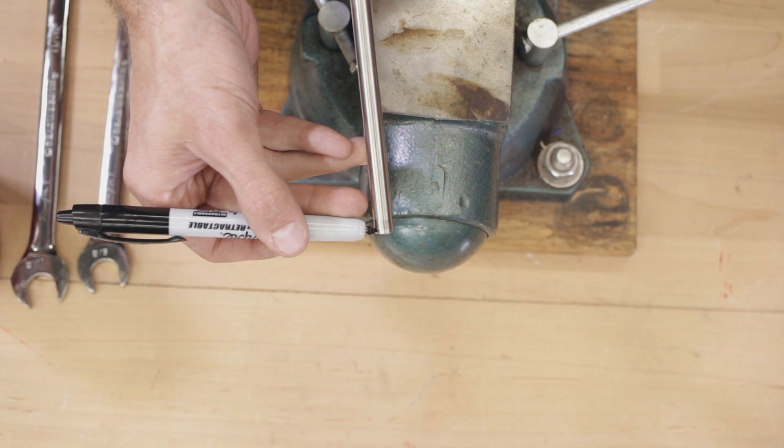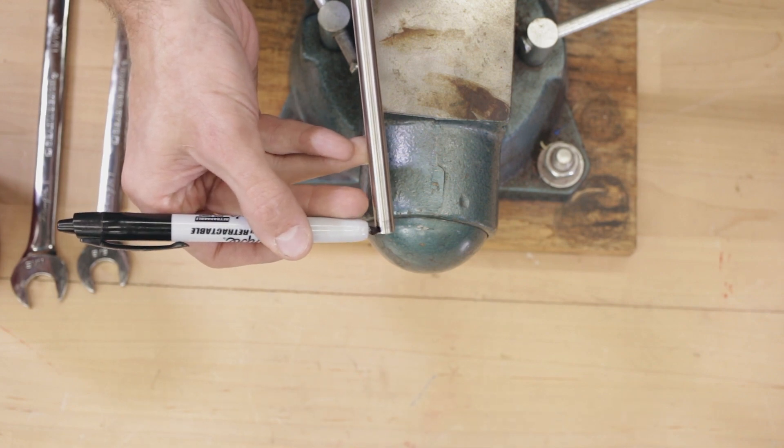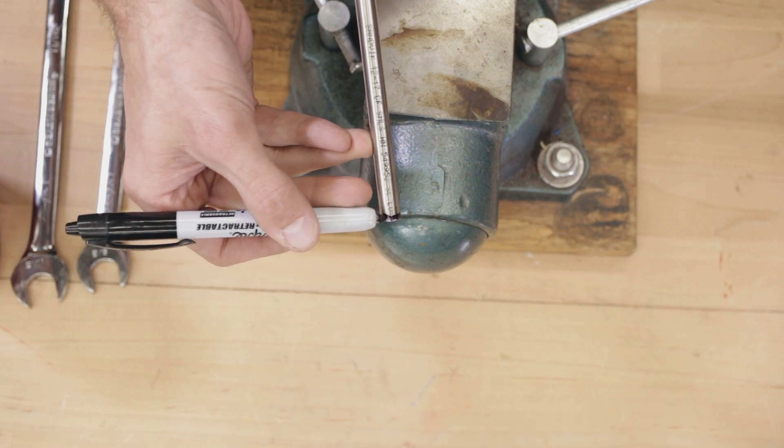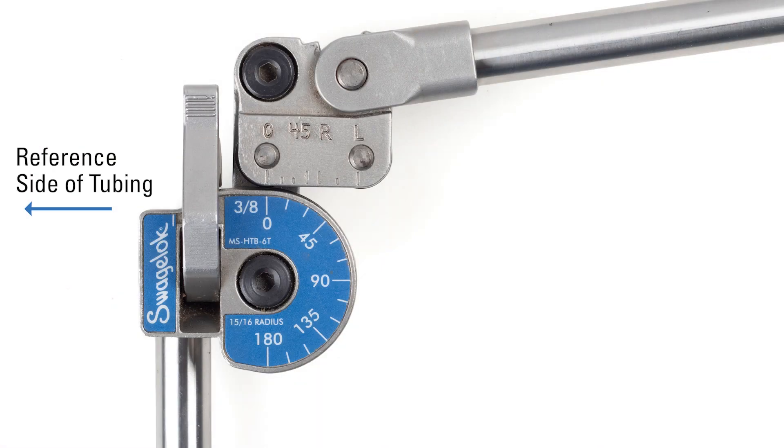One of the first things you can do on your tubing is make an end reference mark. This mark will make sure you always know which side of the tube is the reference side, which will go to the left side of your bender.